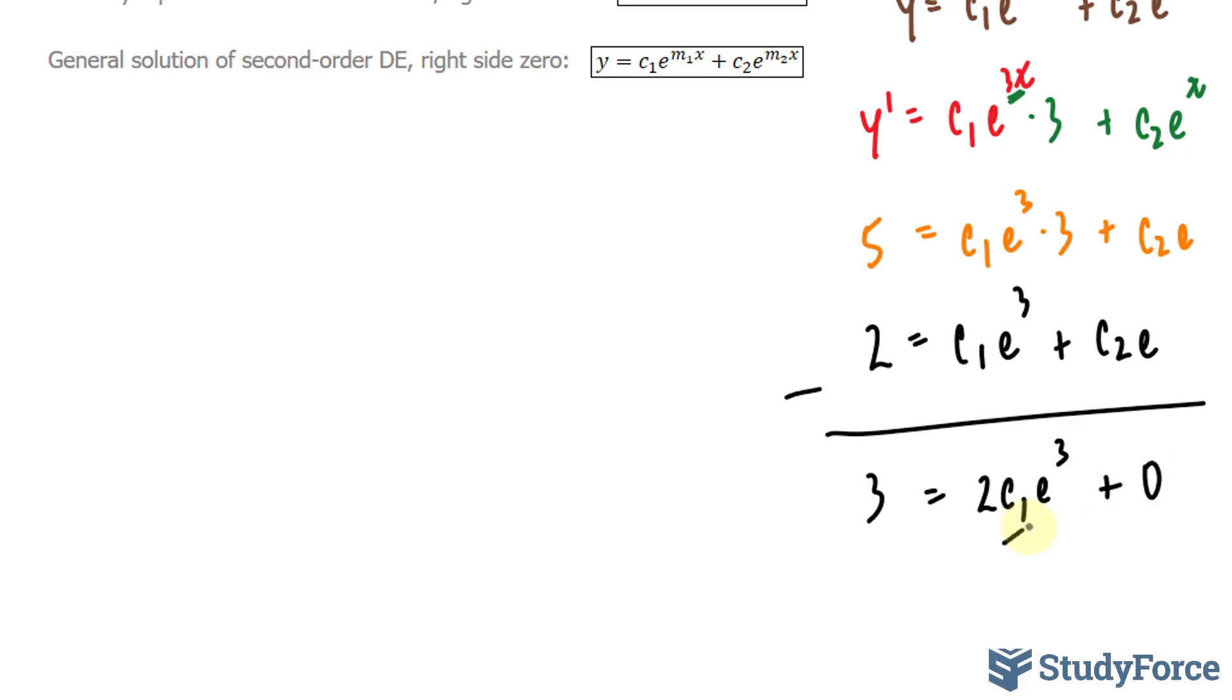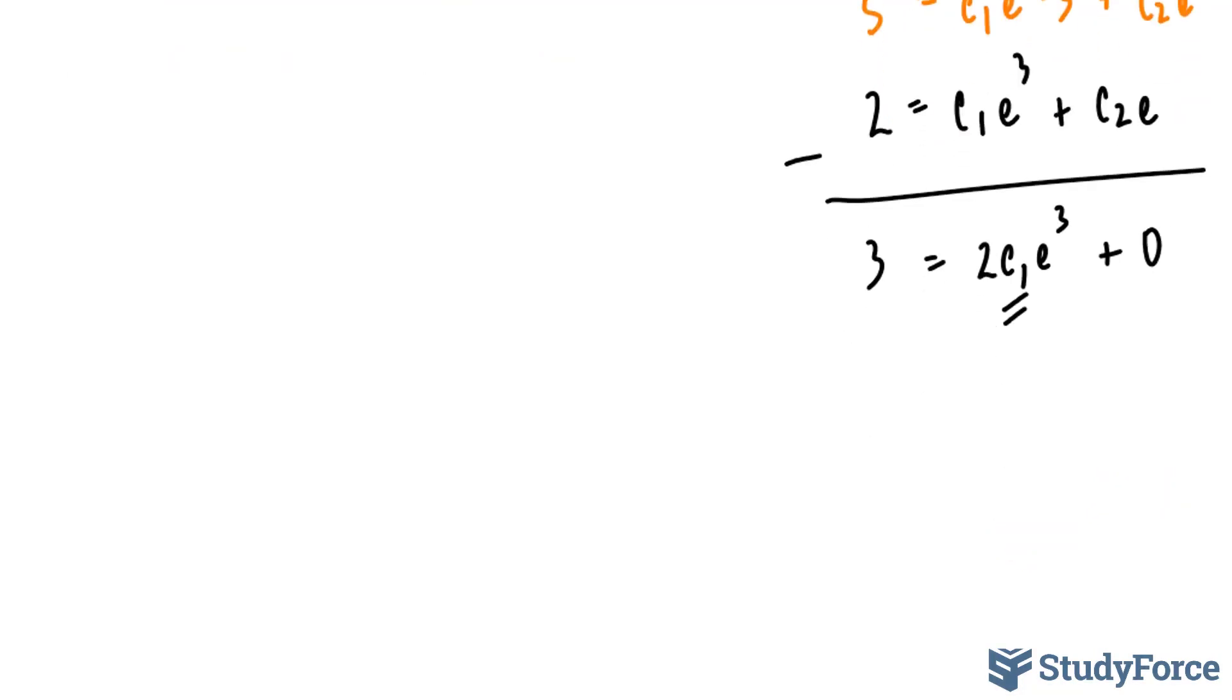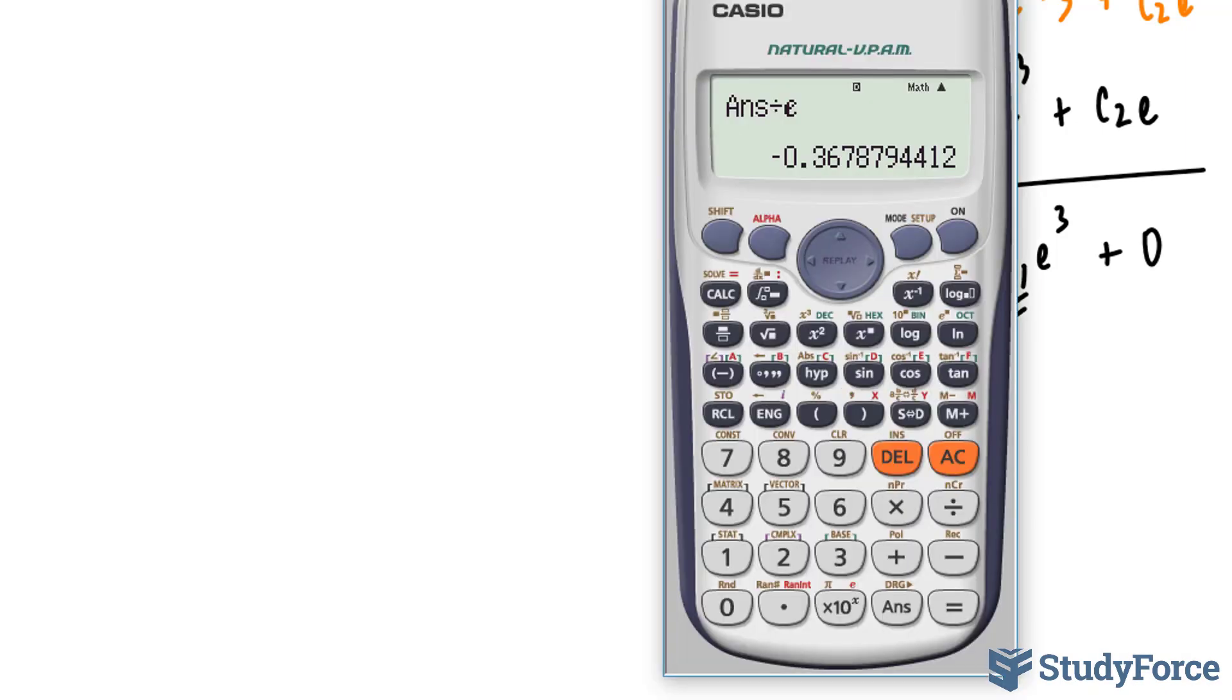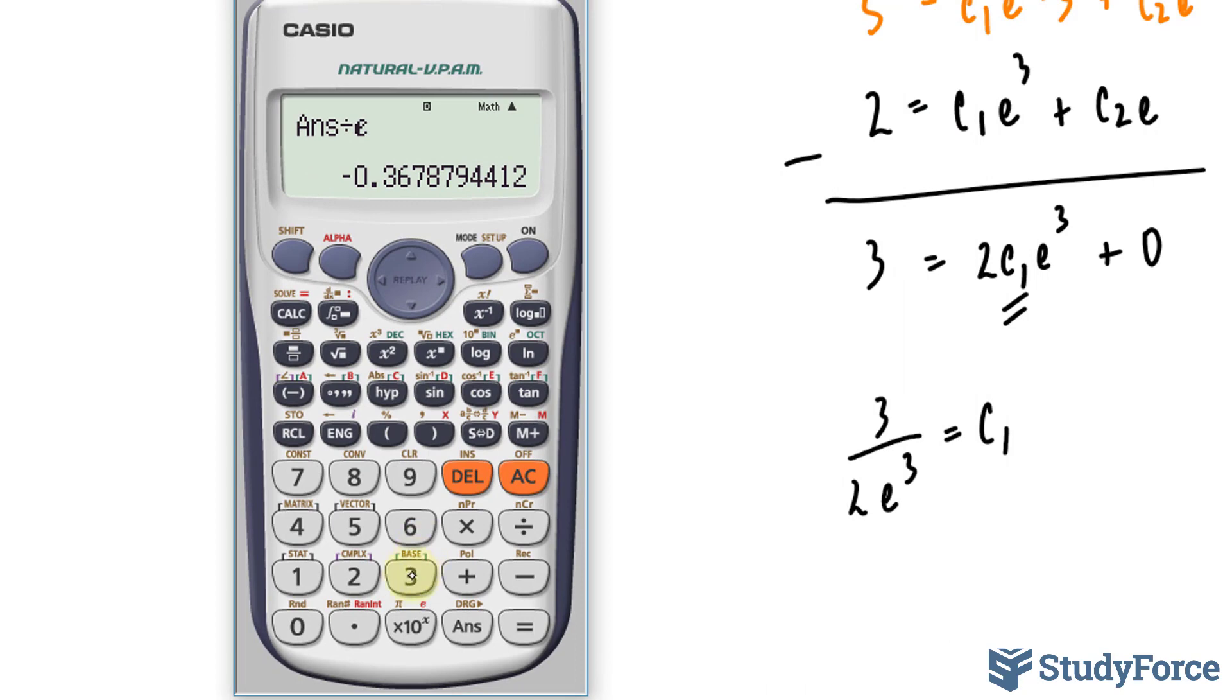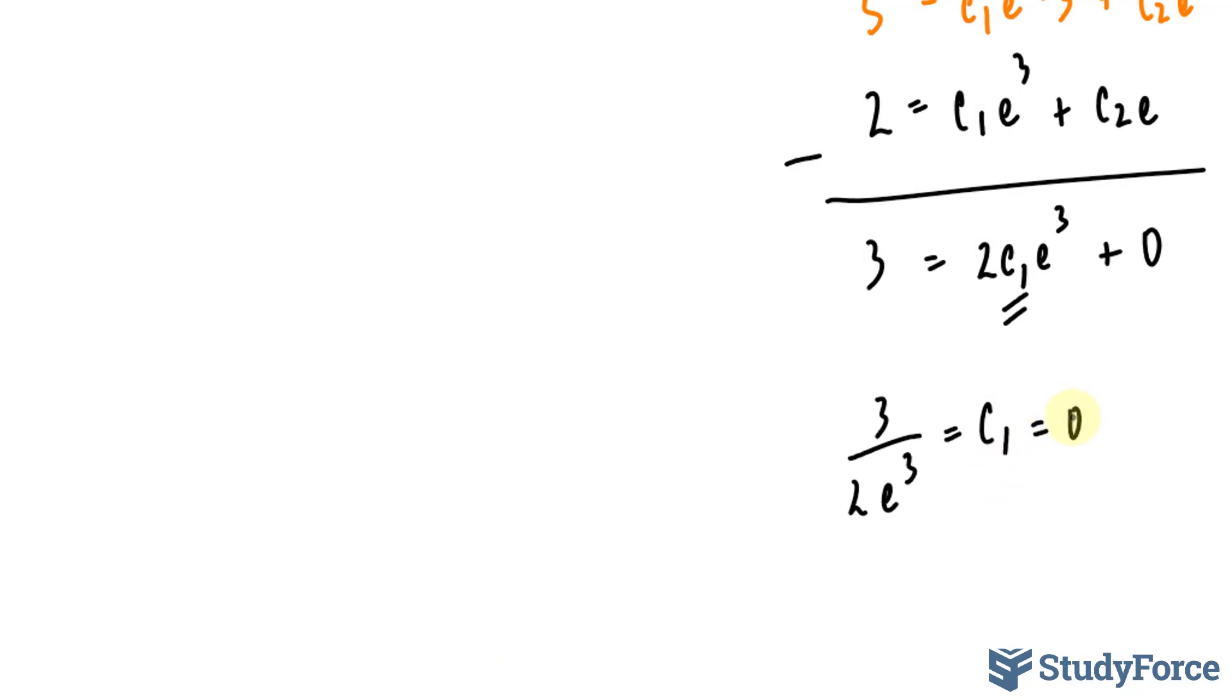Now I'm going to solve for c subscript 1 by dividing both sides of this equation by 2 times e to the power of 3. So we have 3 over 2 times e to the power of 3 and this number represents c subscript 1. I'll use my calculator, 3 over 2 times e to the power of 3. And this gives us 0.0746.